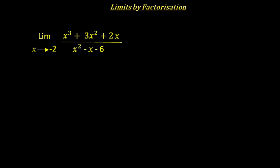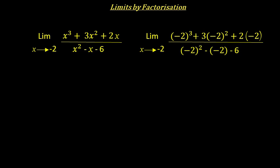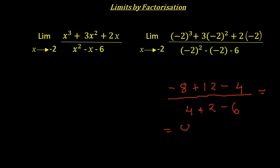For example, let's consider this rational expression: x³ + 3x² + 2x divided by x² - x - 6. If we substitute x = -2 here, the numerator becomes -8 + 12 - 4, and the denominator becomes 4 + 2 - 6. The numerator becomes 0 and the denominator is also 0, which means this is an indeterminate form.